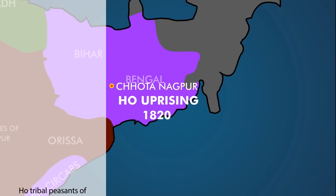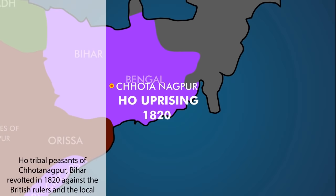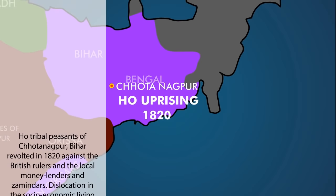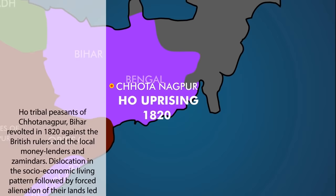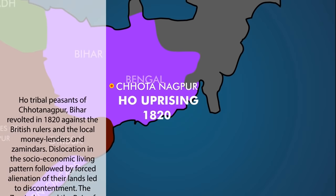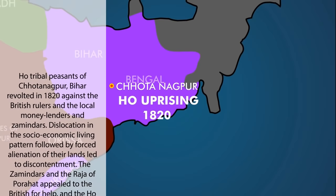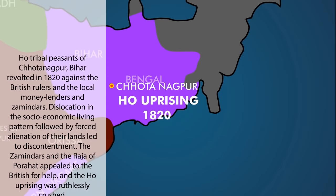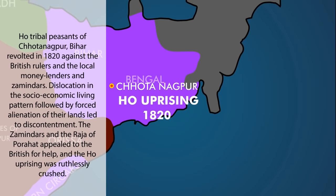Chor tribal peasants of Chotanagpur, Bihar revolted in 1820 against the British rulers and the local moneylenders and zamindars. Dislocation in the socio-economic living pattern followed by forced alienation of their lands led to discontent. The Zamindars and the Raja of Purahad appealed to the British for help and the whole uprising was ruthlessly crushed.